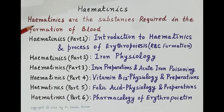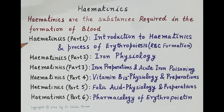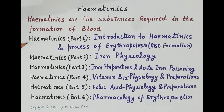For the purpose of simplicity and easy understanding, this topic is covered in six parts — six videos. The first part deals with introduction to hematinics and the process of erythropoiesis, that is, the process of formation of red blood cells. This helps us understand how iron, vitamin B12, folic acid, and erythropoietin are essential for RBC formation and how their deficiency results in anemia.